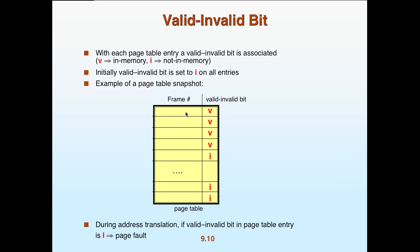A valid bit means the page contains information valid for the running process trying to access it. If the pages don't belong to the process that wants to use them, it's invalid, meaning we have a page fault. A higher number of page faults means more swapping — we pull the page from the backing store back into memory and fix the configuration so the memory pages belong to the correct process. Initially, the invalid bit is set to I for all entries because nothing is loaded yet.